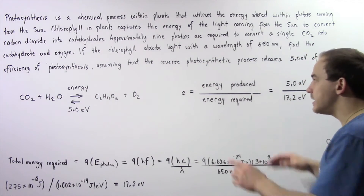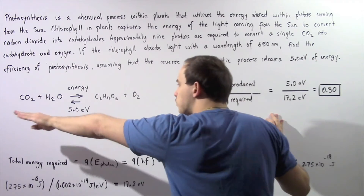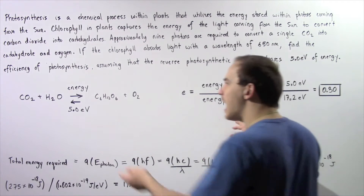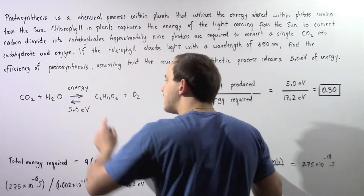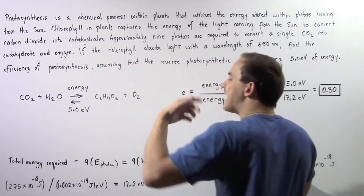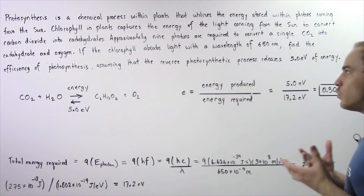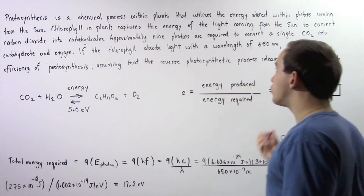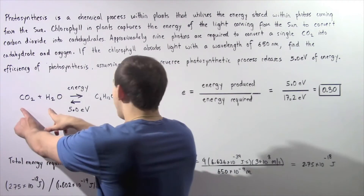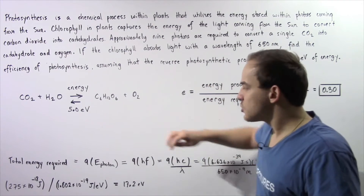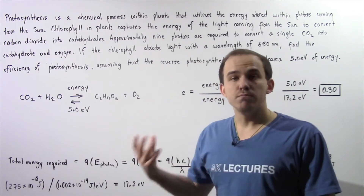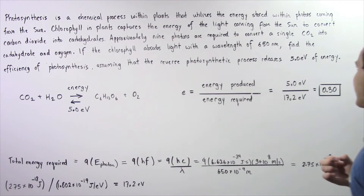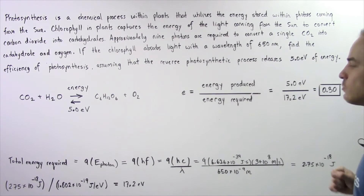We are given that the energy produced in the reverse process is five electron volts. So all we have to do is find the quantity of energy required in the forward endothermic process. To find that, we use the fact that nine photons are required to convert the reactants into the products. So we take nine and multiply by the energy found in a single photon with a wavelength of 650 nanometers.